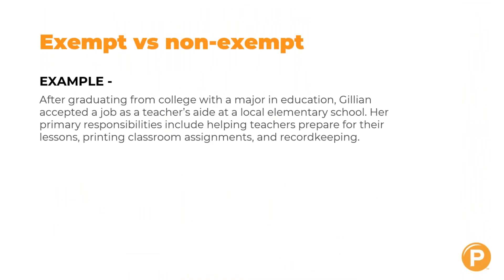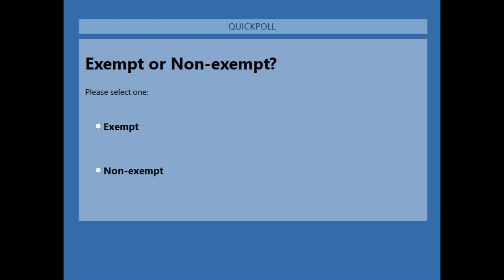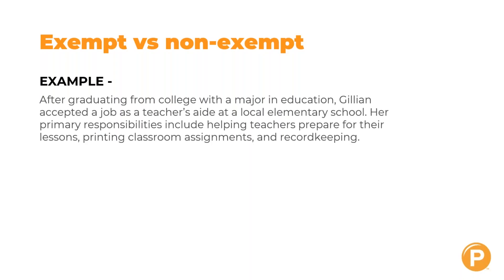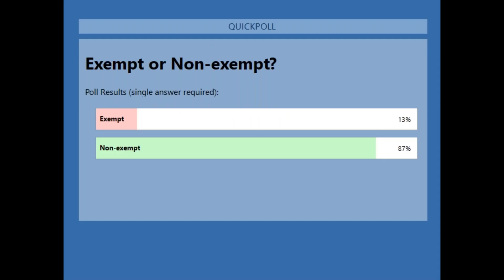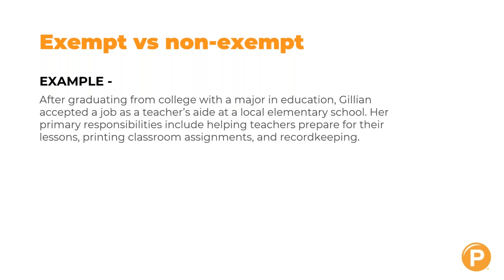Counter-example: Gillian graduated college with a major in education and accepted a job as a teacher's aide at a local elementary school. Her primary responsibilities include helping teachers prepare lessons, printing classroom assignments, and record keeping. She is non-exempt. Although she has a college degree, she is not considered a learned professional because her actual duties don't meet the standard — she's a helper, not the teacher.